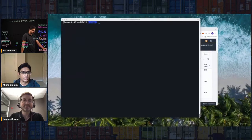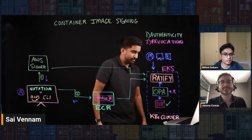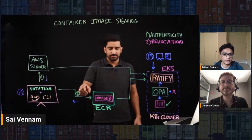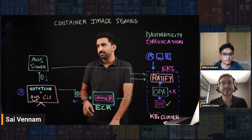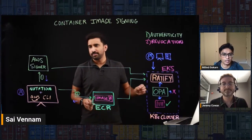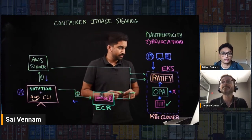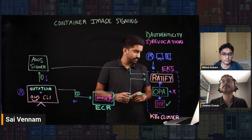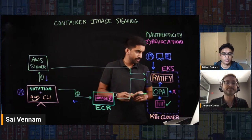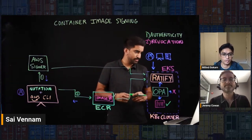One quick thing to call out: with Signer, you can sign in one region. Your signing profile is created in one region, you sign an image and push it to ECR. If you're deploying to multiple regions, you don't have to do anything different — with Signer you sign in one region, but you can verify in all AWS regions.